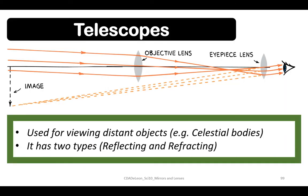Telescopes are used for viewing distant objects, especially celestial bodies. There are two types: reflecting and refracting.